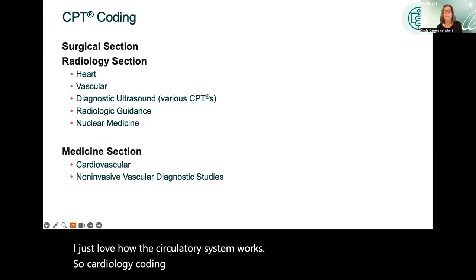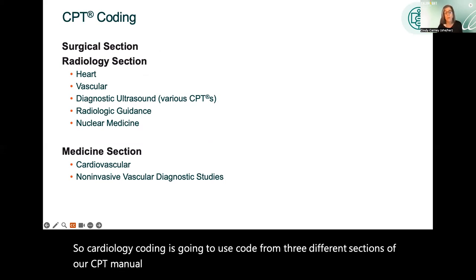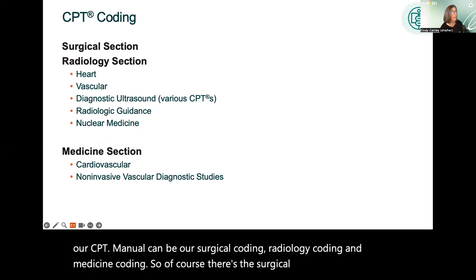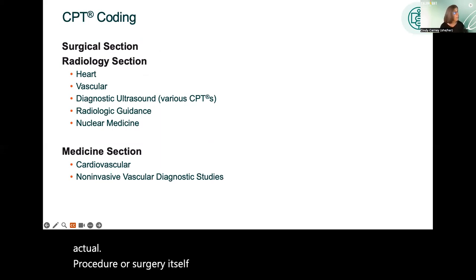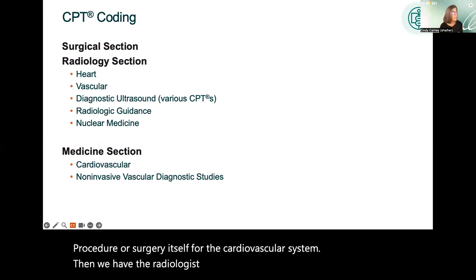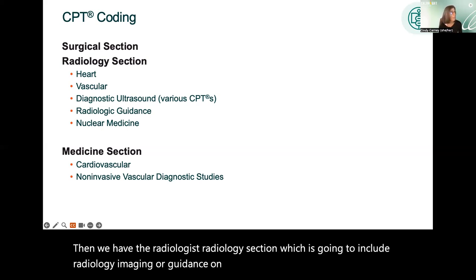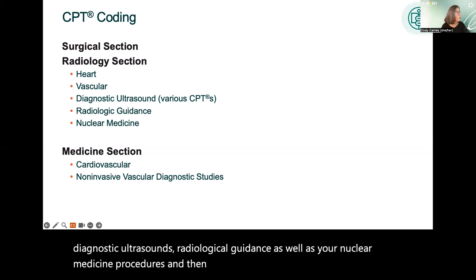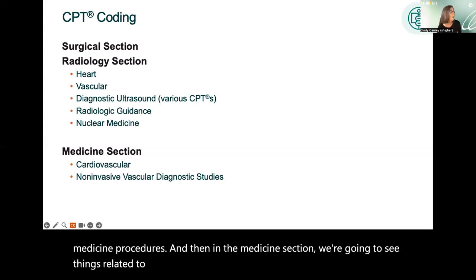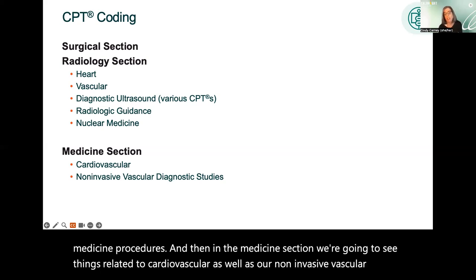Cardiology coding uses codes from three different sections of the CPT manual: surgical coding, radiology coding, and medicine coding. The surgical section covers the actual procedure or surgery for the cardiovascular system. The radiology section includes radiology imaging or guidance for the heart and vascular system, diagnostic ultrasounds, radiological guidance, and nuclear medicine procedures. The medicine section covers cardiovascular services as well as non-invasive vascular diagnostic studies.